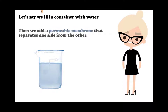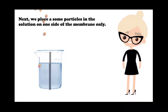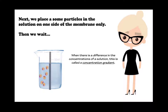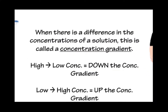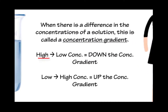Let's say we fill a container with water, then we add a permeable membrane that separates one side from the other. Next, we place some particles in the solution on one side of the membrane only, then we wait. When there is a difference in the concentration of a solution, this is called a concentration gradient. When particles move from an area of high concentration to low concentration, this is called moving down the concentration gradient.